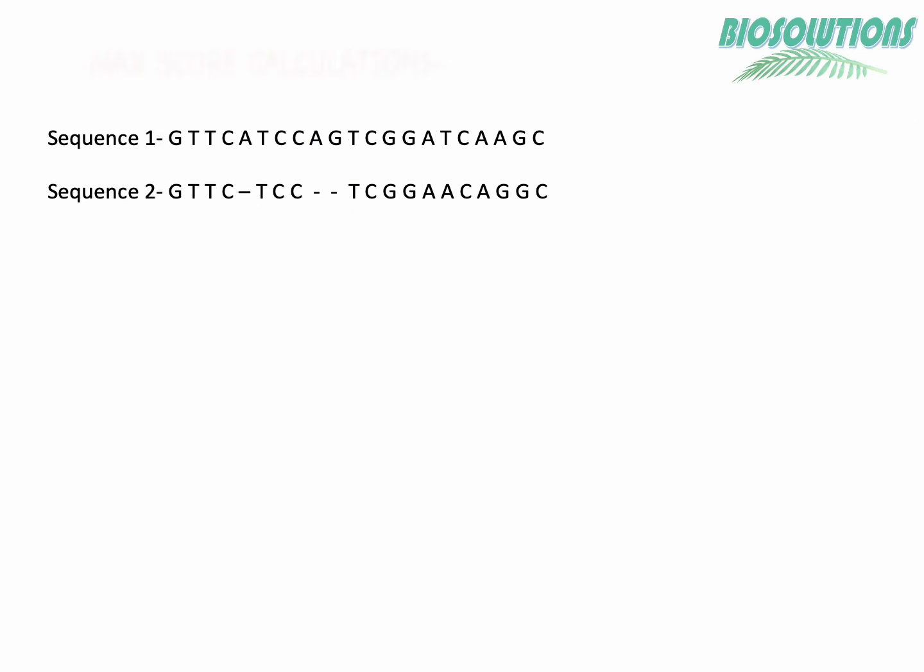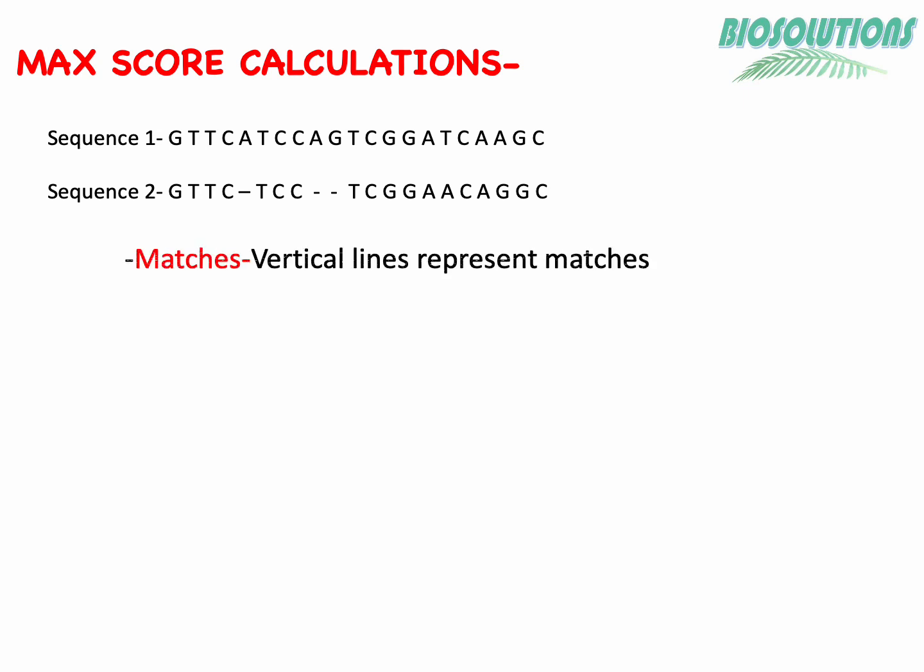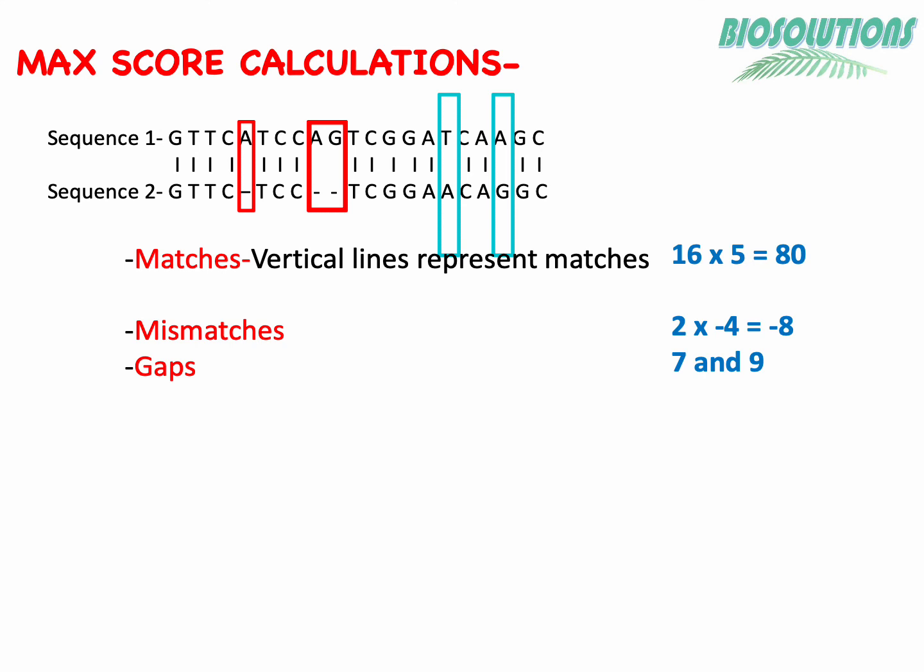How do we adjust gap scores in max score calculated by BLAST? BLAST calculates max score by taking into account three things: matches as shown by vertical lines between two sequences, mismatches, and gaps. For our example, matches will be assigned a positive score of 5 each, mismatches will be assigned a negative score of 4 each, and for the gaps we have already done the calculations.